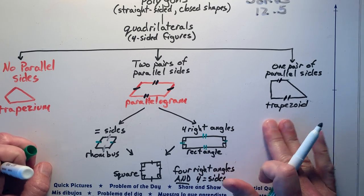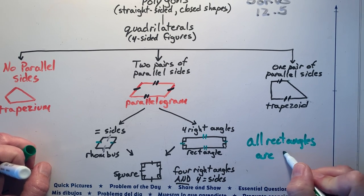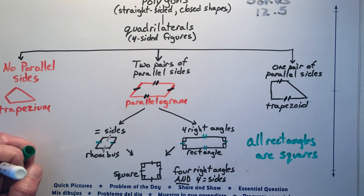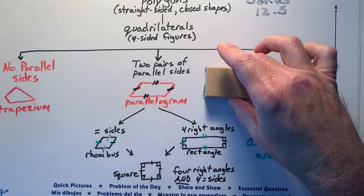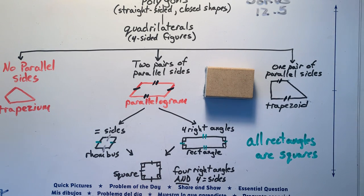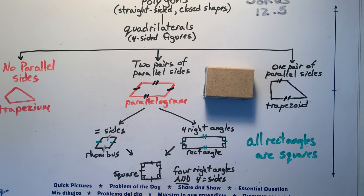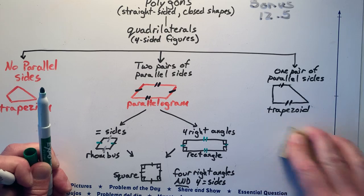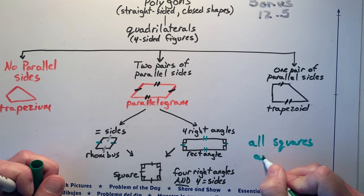What if I said all rectangles are squares? Is that true or false? Think about it. All rectangles are squares — can you find a rectangle that is not a square? How about my eraser? That's a rectangle. Is it a square? No. Is my mat a square? No. Is this rectangle that I drew a square? No. So all rectangles are squares is not a true statement.